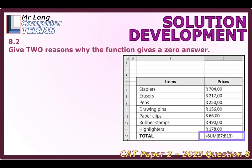The formula shown is =SUM(B7:B13), which has given a zero answer, and we need to give two reasons for why. The first thing that sticks out is that column B is just a list of names of items — so it's probably the incorrect cell range. If they were going to do a sum, it would probably be for column C, which has the actual prices. Summing text is not going to be useful.